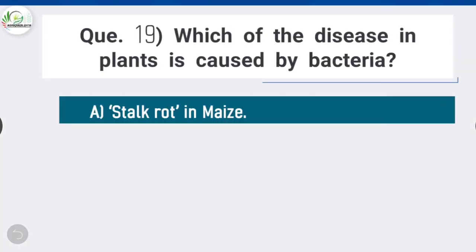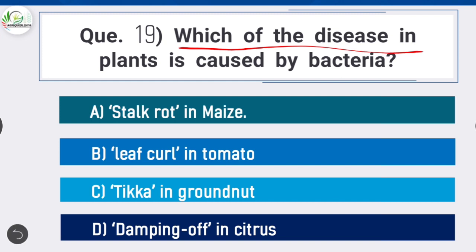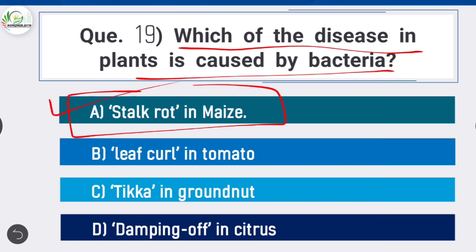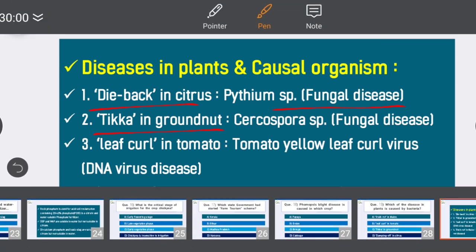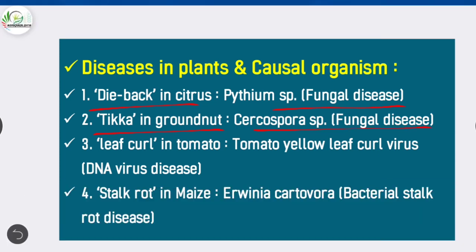Question 19: Which of the following diseases in plants is caused by bacteria? Option A is correct: stalk rot in maize. Dieback in citrus is caused by Pythium species (fungal disease). Tikka in groundnut is caused by Cercospora species (fungal disease). Leaf curl in tomato is caused by tomato yellow leaf curl virus (DNA virus). Stalk rot in maize is caused by Erwinia cartovora, which is a bacterial stalk rot disease.